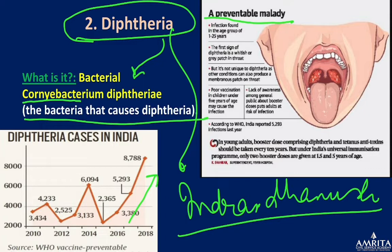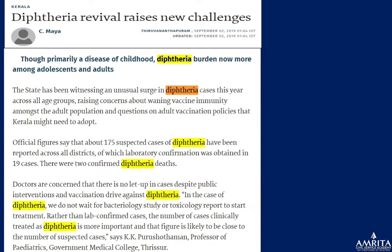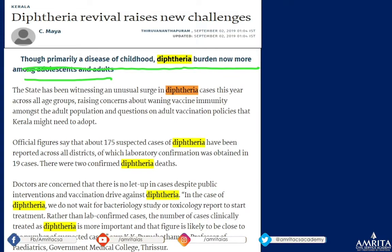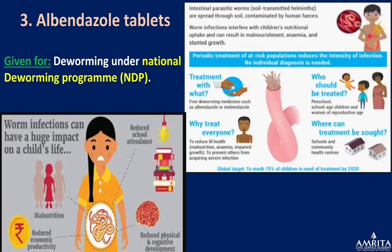Signs of diphtheria include a whitish-grey patch on the throat, though this is not unique to diphtheria. Poor vaccination in children under five and lack of awareness about booster doses put adults at risk. Kerala is witnessing a rise in diphtheria cases, especially among adolescents and adults. Since it is covered under Mission Indradhanush, the disease is examination-relevant.